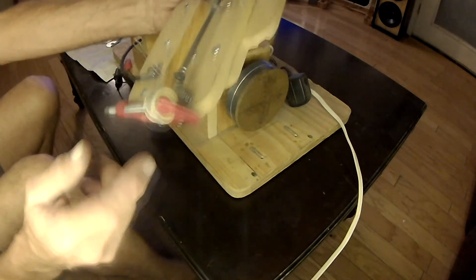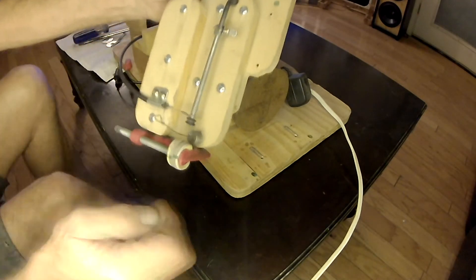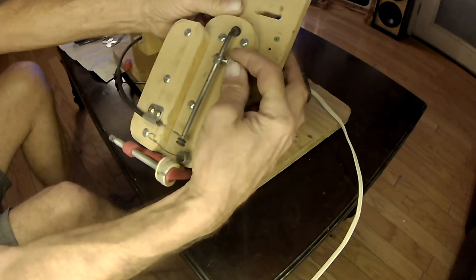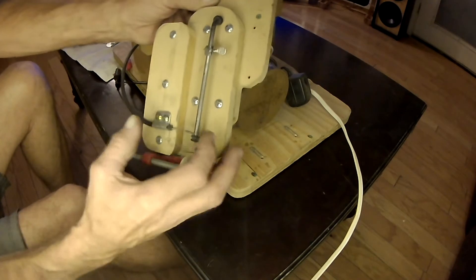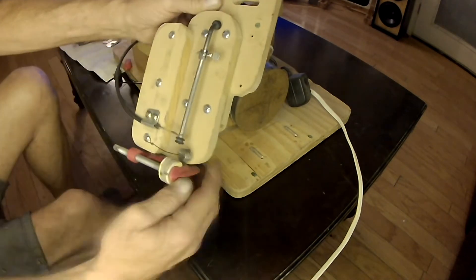Right here on the end of it, we've got the tensioner and the dancer and the traverse guide. It's adjustable by this little thumb screw here. The whole wire guide slides from one end to the other. And that's how you vary the width of the travel.